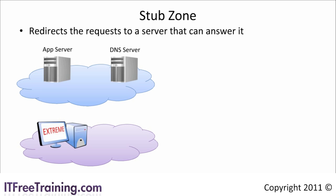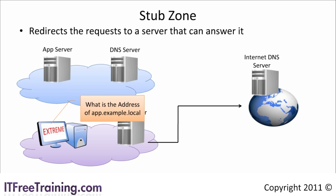The problem occurs when the client attempts to resolve the DNS name. By default, the client will attempt to resolve the DNS name by going to a DNS server on the internet. If the DNS name space is a private name space, the DNS server on the internet will not know how to resolve it. In this case, you could create a secondary zone on the second company's DNS server; however, as access between the two companies would be rare, this would be a waste of bandwidth keeping the secondary zone up to date. Without a secondary zone, the queries for the zones would go to an external DNS server to resolve, which will not be able to resolve it. To solve this problem, stub zones were created.